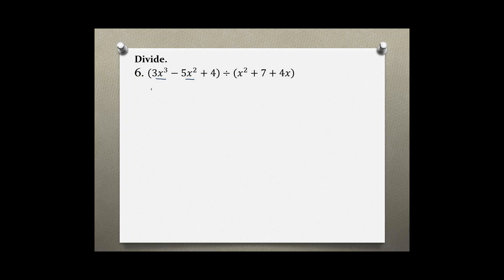Let's rewrite this problem and fill in this missing term. So, 3x cubed minus 5x squared and then plus 0x, that is the missing term, plus 4.